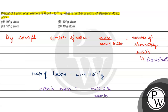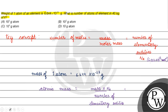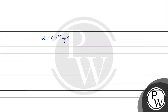Divided by the number of elementary entities. Mass is 6.644 into 10 raised to the power minus 23 gram, multiplied by Avogadro's number which is 6.022 into 10 raised to the power 23 mole inverse, divided by number of atoms, which is 1.